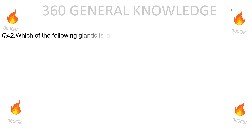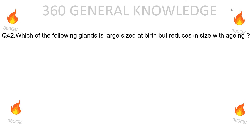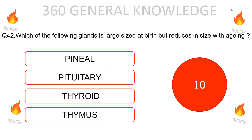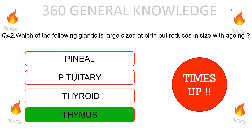Which of the following glands is large at birth but reduces in size with aging: pineal, pituitary, thyroid, or thymus? The correct answer is thymus.